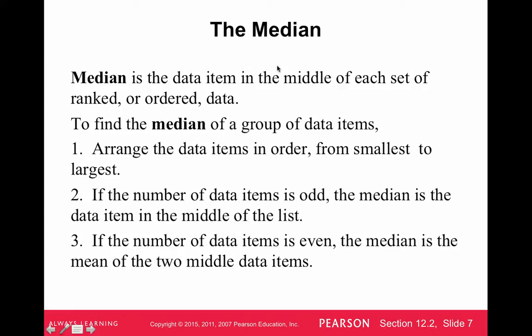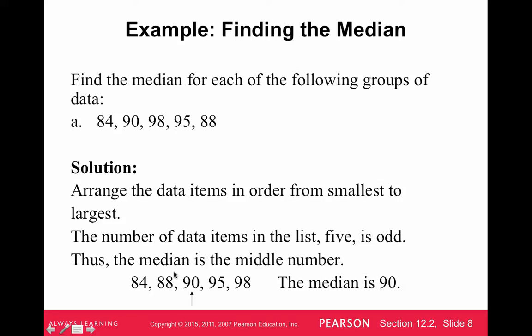The median, next measure of central tendency, is the data item in the middle of each data set. So median, middle. Sometimes we think of the median for the road, that's the part in the middle, the grassy part in the middle, or like a curve. So in the middle of the road. So median, middle, that's the data item in the middle of each data set when the data set is ranked or ordered. So to find the median, there's two steps. You arrange the data in order from smallest to largest, or three steps. But the main thing is you've got to arrange the data in order, and if the number of data items is odd, then the median is the data item in the middle, and if the number of data items is even, then the median is the mean of the two middle data items. So let's just look at an example.